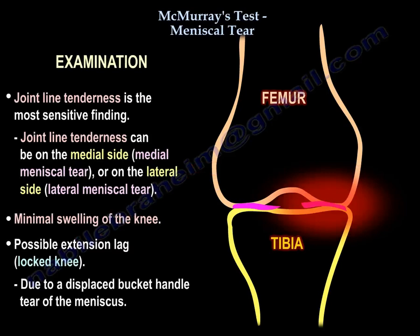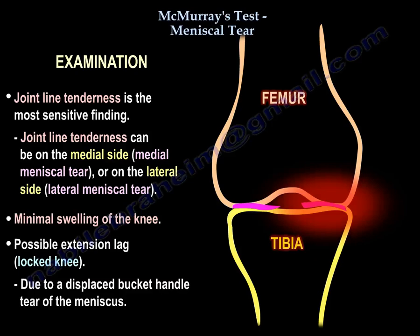Examination of the patient will show joint line tenderness, and that is the most sensitive finding. Joint line tenderness can be on the medial side for a medial meniscal tear or on the lateral side for a lateral meniscal tear. You may find minimal swelling of the knee and an extension lag, which means the knee is locked due to a displaced bucket handle tear of the meniscus.